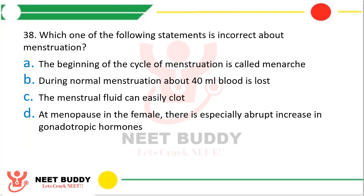Question 38. Which of the following statements is incorrect about menstruation? (A) Beginning of the cycle of menstruation is called Menarche. (B) During normal menstruation, about 40 ml of blood is lost. (C) The menstrual fluid can easily clot. (D) At menopause in the female, there is a specially abrupt increase in gonadotrophic hormones. The correct answer is option C — menstrual fluid can easily clot — this is an incorrect statement.